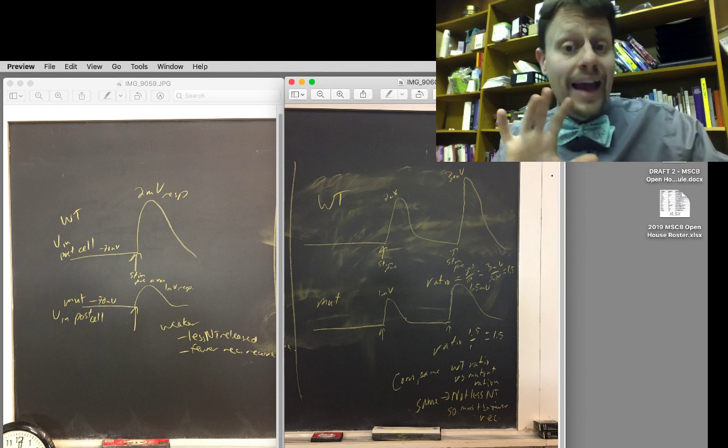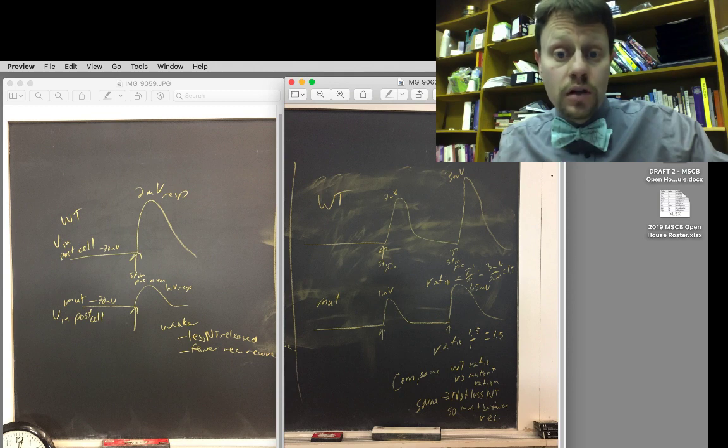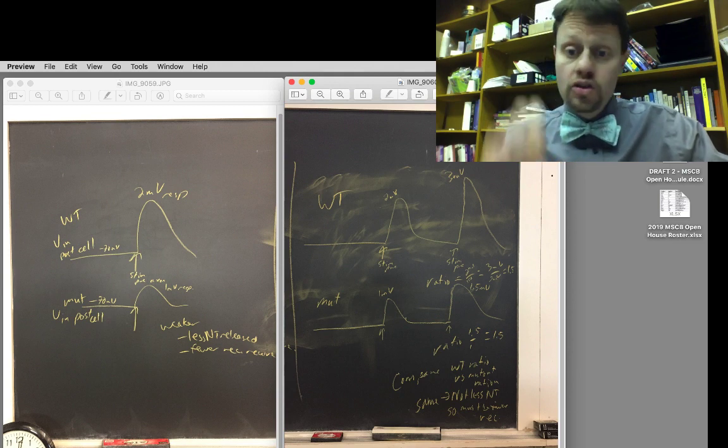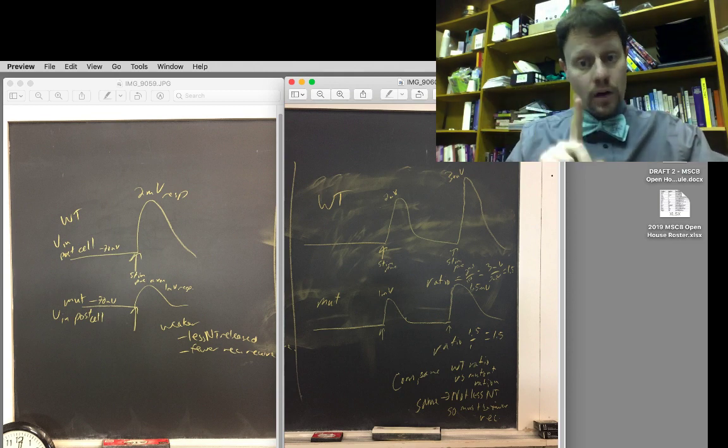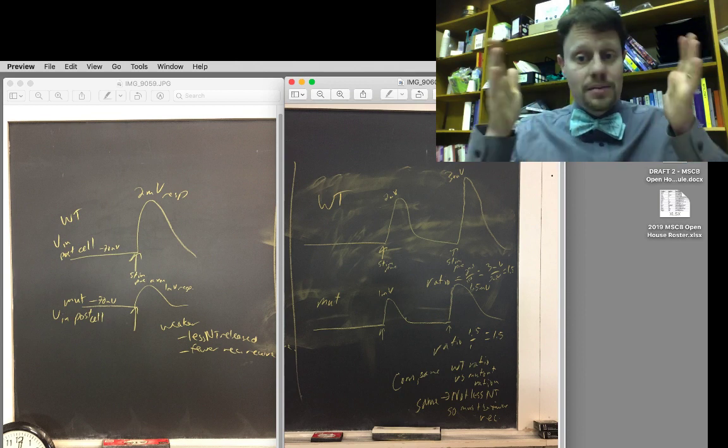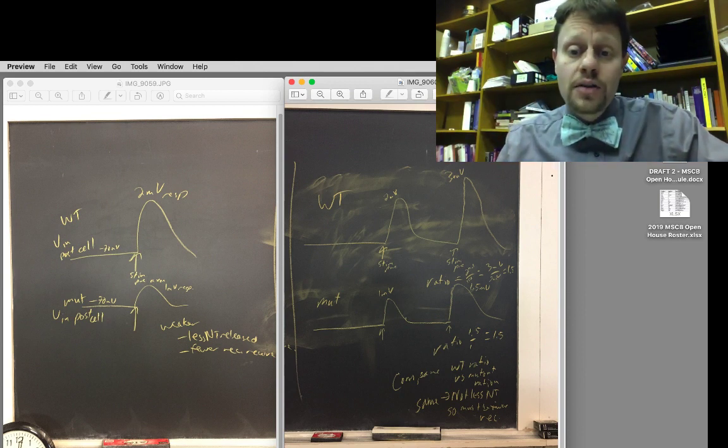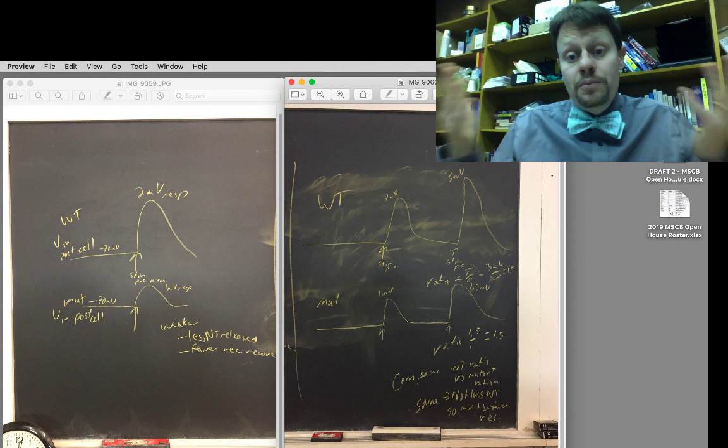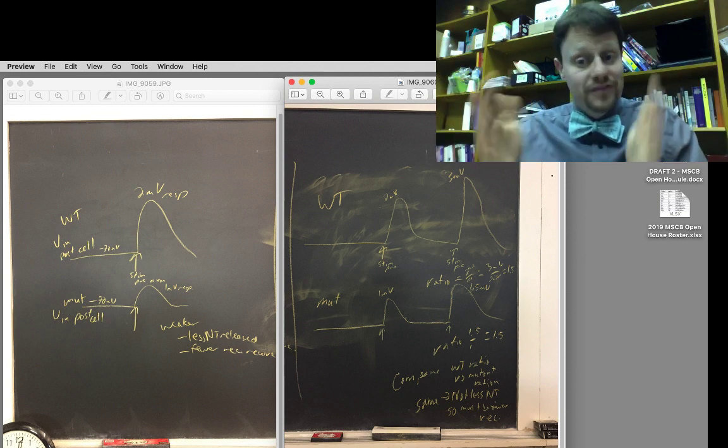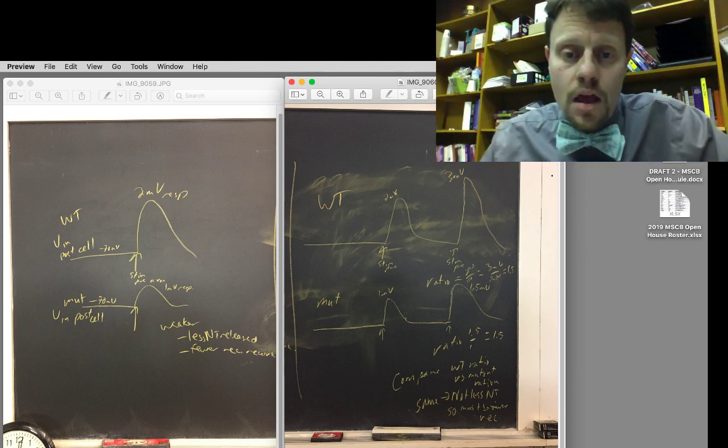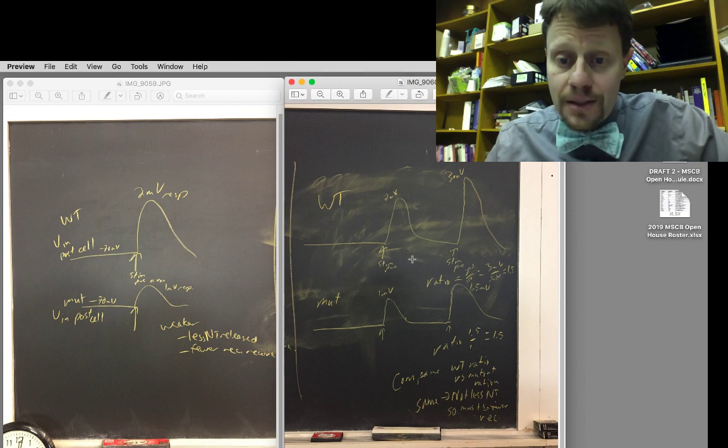The method that we have discussed that does work for this is to look at what is called paired pulse ratios. Instead of stimulating our input once, we stimulate it twice, maybe 50 milliseconds apart. That double stimulus is what we call paired pulse: two action potentials 50 milliseconds apart.